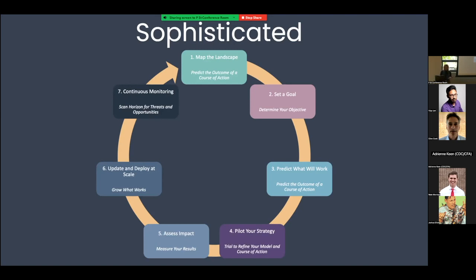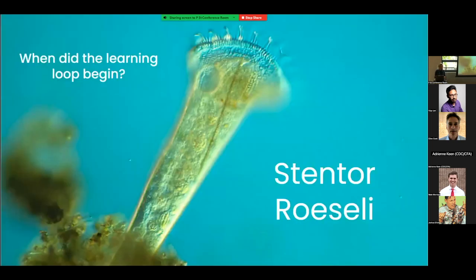Whether it's simple or sophisticated, I think everything that is alive learns. So I want to bring us back in time and ask this big picture question: when did the learning loop actually begin? I want to focus our attention on this beautiful creature, the Stentor Roselli. Is anybody familiar with it?